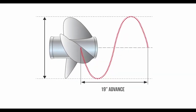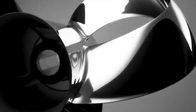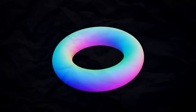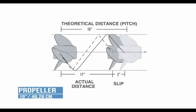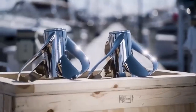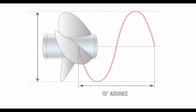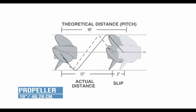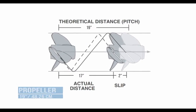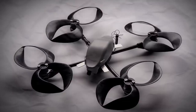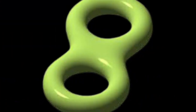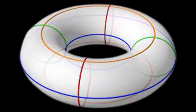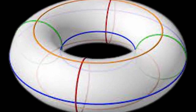In mathematics, a toroid is a revolution surface with a hole in the center. The axis of revolution is traversed by the hole and thus does not intersect the surface. A hollow rectangle section ring, for example, is produced when a rectangle is rotated around an axis parallel to one of its edges. If the revolved figure is a circle, the object is referred to as a torus. A toroidal polyhedron is also referred to as a toroid, and does not have to be circular and can have any number of holes. A g-hole toroid can be thought of as approximating the surface of a torus with a topological genus g of one or more.